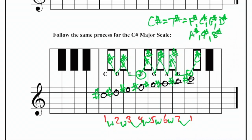Seven sharps in the C-sharp major scale, and this is how the C-sharp major scale sounds.